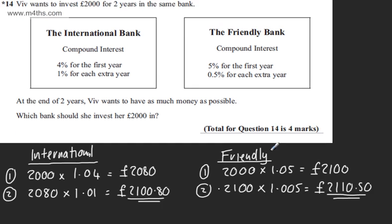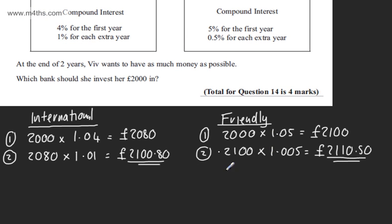I need to answer the question. I've done the maths, so I'm going to put, therefore, using my therefore symbol, Viv should pick, so should pick the friendly bank. OK, so writing this in, Viv should pick the friendly bank.